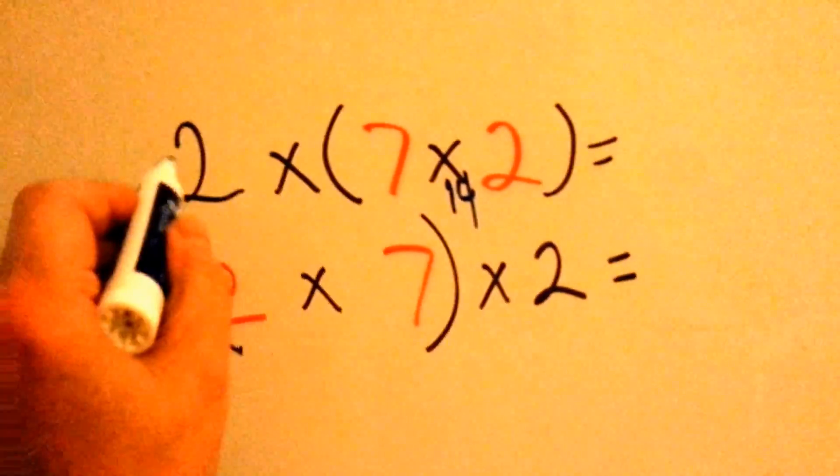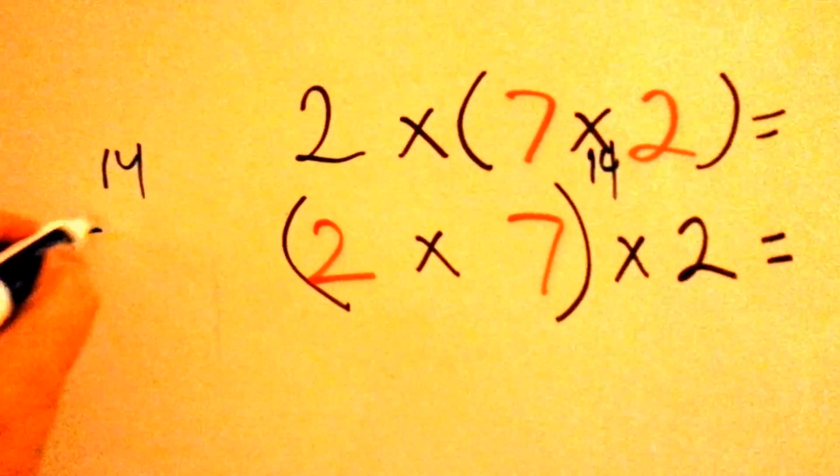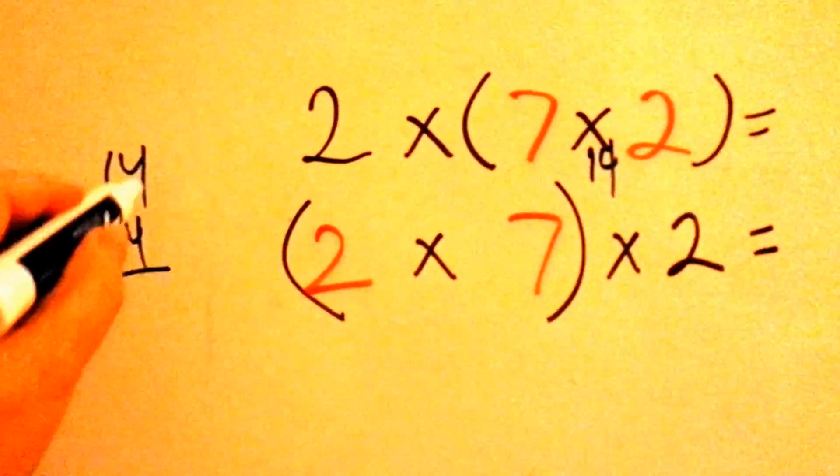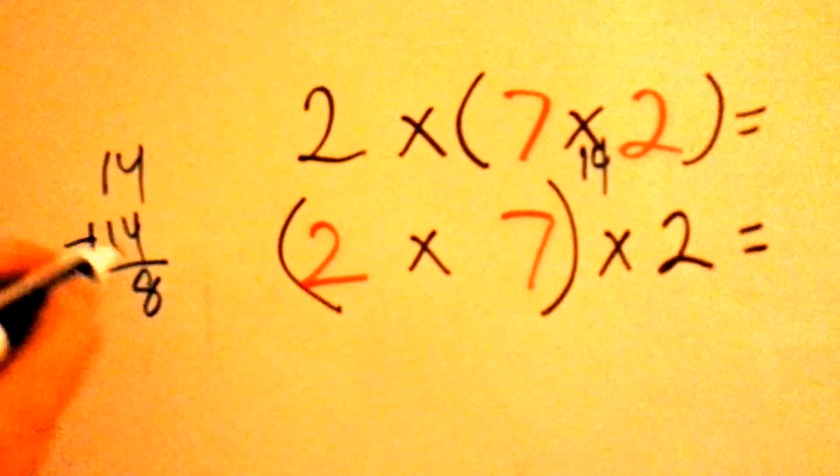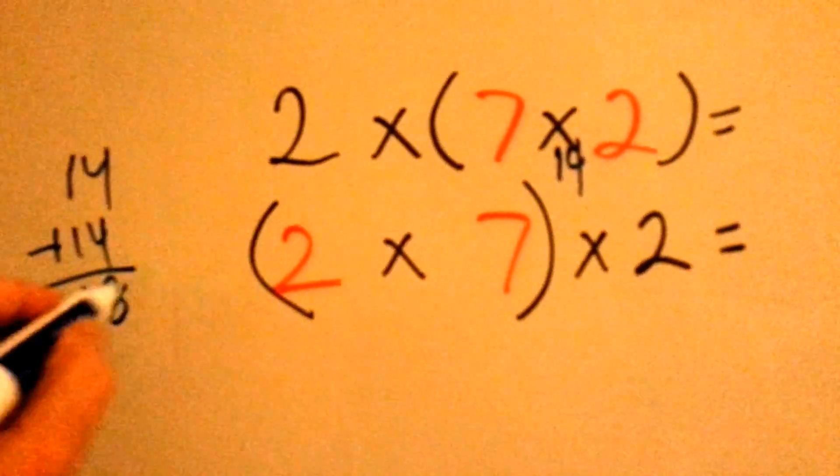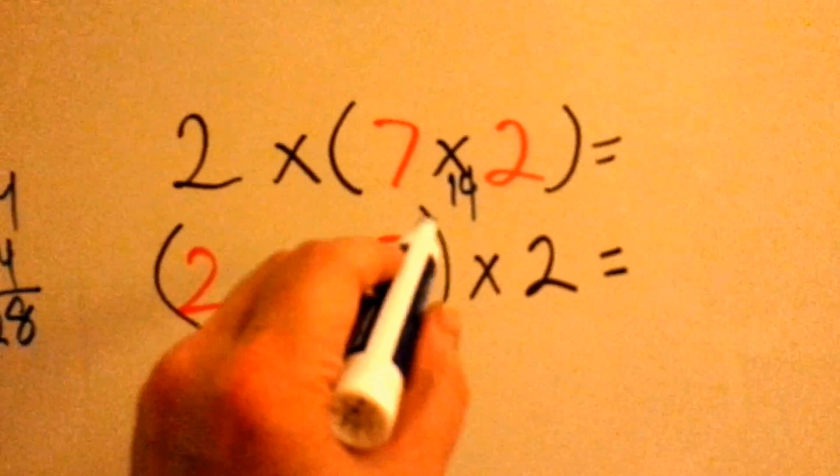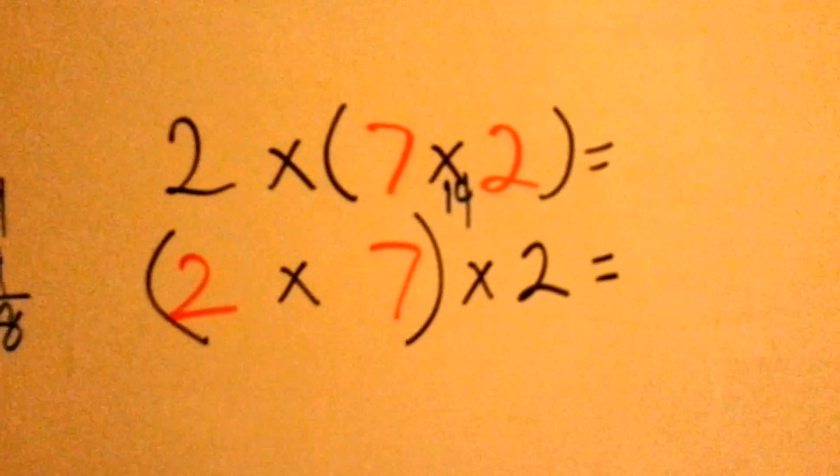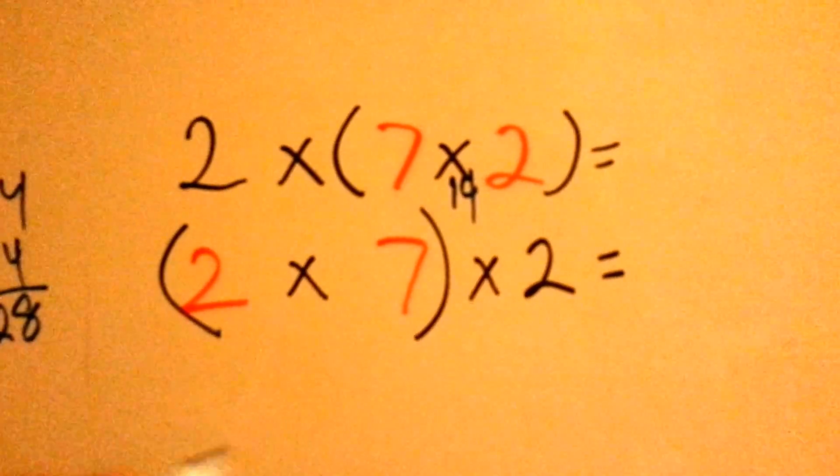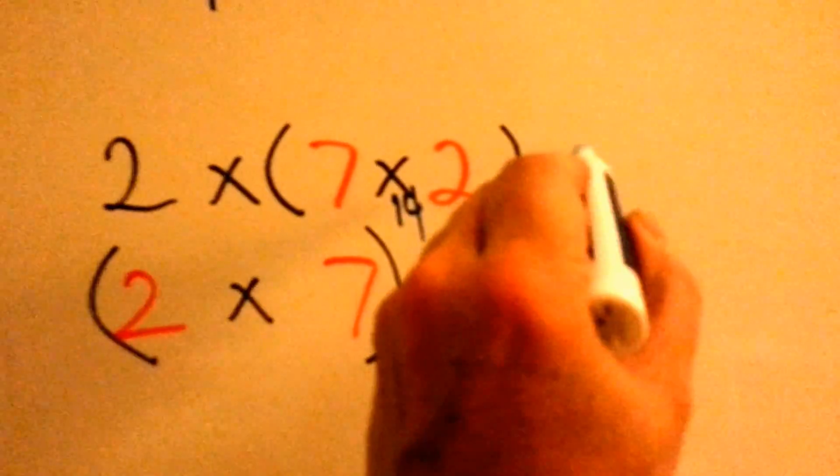What's fourteen times two? That's the same thing as fourteen plus fourteen. Four and four is eight. One and one is two. Fourteen times two is twenty-eight.